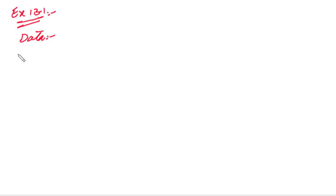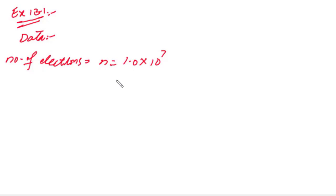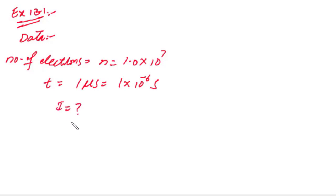1.0 × 10⁷ electrons — we have the number of electrons and its value is 1.0 × 10⁷ — passed through a conductor in 1 microsecond, which is 1 × 10⁻⁶ seconds. We have to find the current in amperes flowing through the conductor. The electronic charge has a magnitude of 1.6 × 10⁻¹⁹ coulomb.